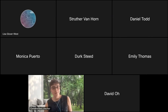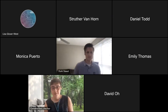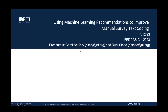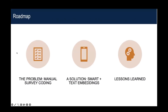Thank you so much, Emily, for introducing us. Let me share my screen and we will be off. Can everyone see the slides? I'm going to assume that is a yes. I'm Carolyn Carey and I'm presenting with Dirk Steed. We're from RTI International. Today we're going to discuss something that we run into a lot at RTI — manual survey text coding — and a method that some of our groups at RTI have used to try to address some of the difficulties that come from this task.